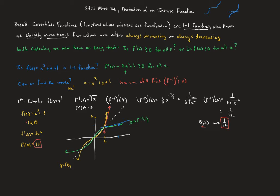Now let's derive this more carefully. For notation, we rename f⁻¹ as g. We know that f(g(x)) = x. Differentiating using the chain rule gives f′(g(x)) · g′(x) = 1. Solving for g′, which is our derivative of the inverse, we get: g′(x) = 1 / f′(g(x)). This is how we'll find the derivative of the inverse most of the time.